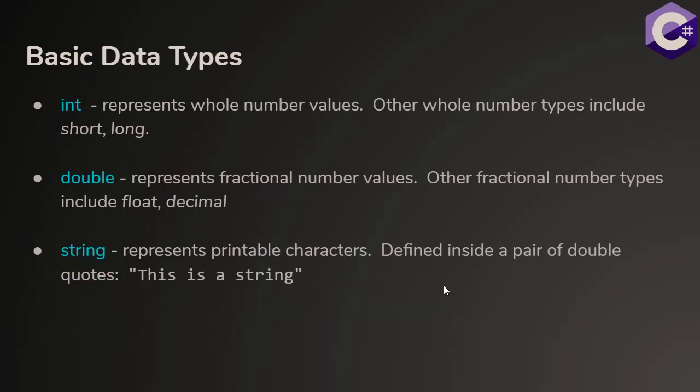Let's remember our basic data types. The integer data type, or int data type, represents whole number values, such as 1 and 2. There are other whole number data types in C#. There's a short and a long. But the integer is the default whole number value in the C# language.